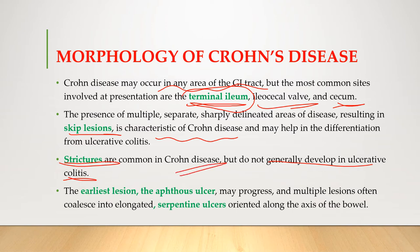The earliest lesion in Crohn's disease is the aphthous ulcer, which may progress. Multiple lesions often coalesce into elongated serpentine ulcers oriented along the axis of the bowel. Important exam points: the most common site of Crohn's disease is terminal ileum; skip lesions differentiate it from ulcerative colitis; strictures are formed in Crohn's disease; and the earliest lesion is the aphthous ulcer.